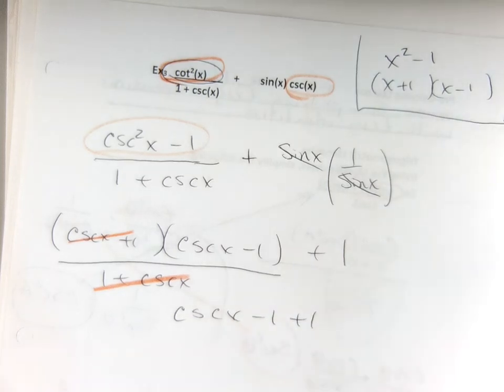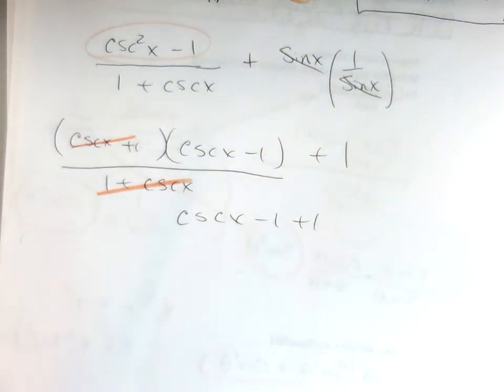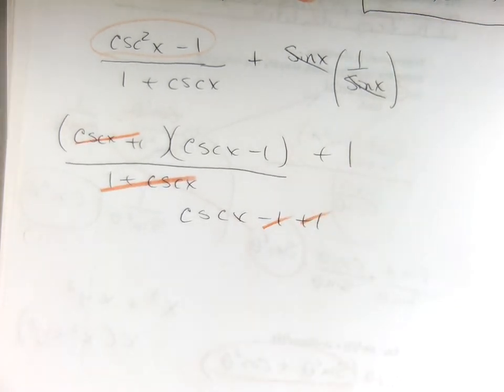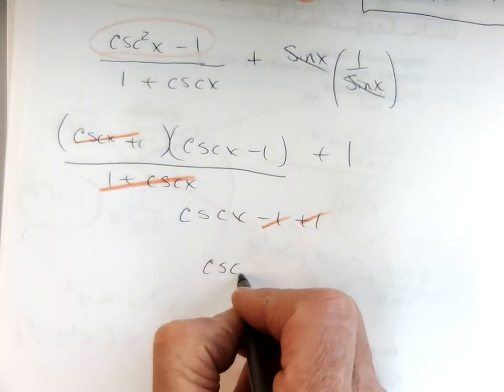Yeah, because you're ahead of me. I like that. Cosecant of x minus one, plus one, and Lauren already saw it. The ones cancel, right? And then you're just left with cosecant.